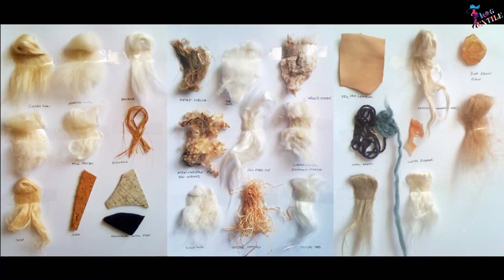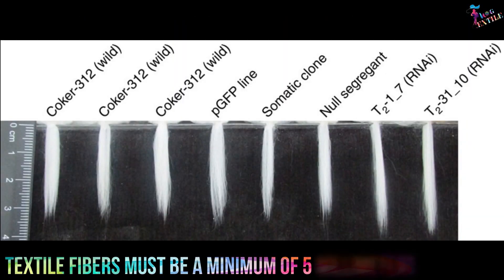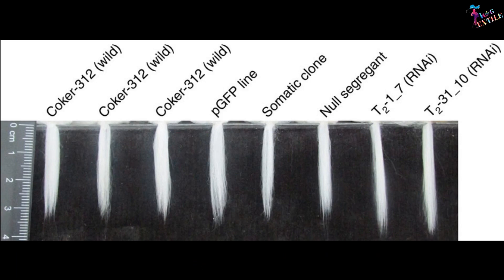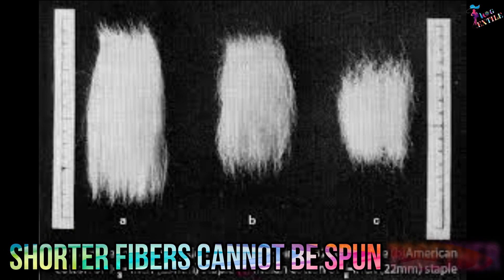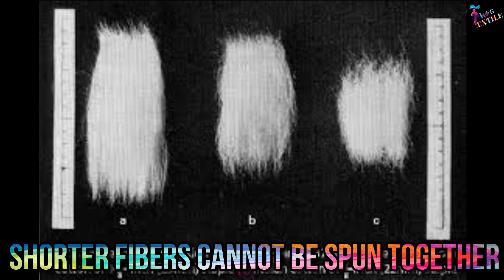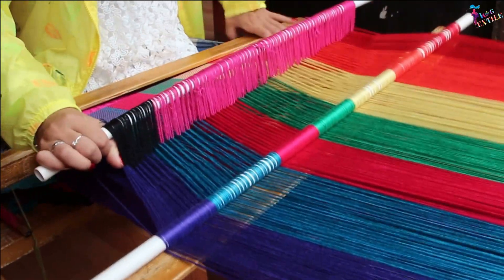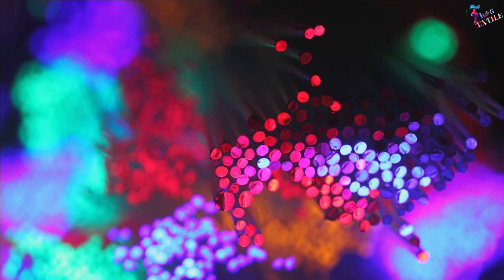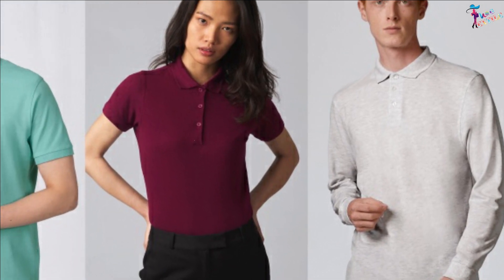Textile fibers must be a minimum of 5 mm in length. Shorter fibers cannot be spun together. So, all textiles are made of fibers, but not all fibers can be used to make textiles.